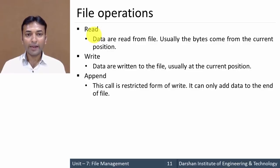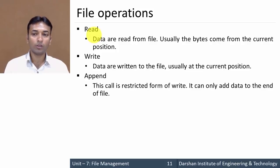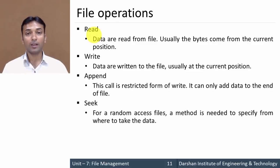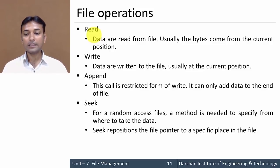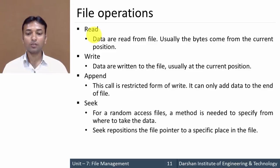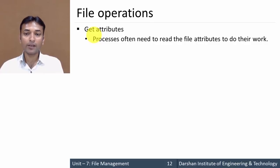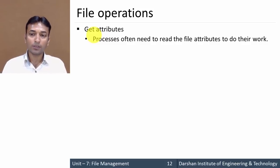The seventh operation is append, which is a restricted form of write — it can only add data to the end of the file. The eighth is seek, used especially for random access files; a method is required to specify from where to take the data. Seek repositions the file pointer to a specific place in the file from where you want to access your data. The ninth is get attribute, used when a process needs to read the file attributes to do its work.